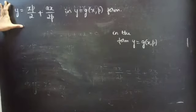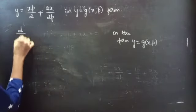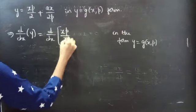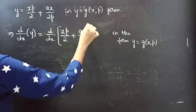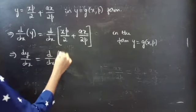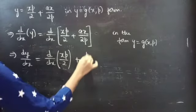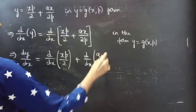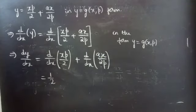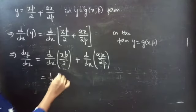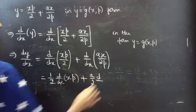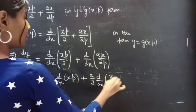Now we will differentiate the total equation with respect to x on both sides. So dy by dx of y equals dy/dx of xp by 2 plus ax by 2p. Then dy by dx equals the derivative of the first term plus the derivative of the second term. Here 1 by 2 is constant, so we take it outside, giving 1 by 2 into dy/dx of xp, plus a by 2 is constant, giving a by 2 into dy/dx of x by p.